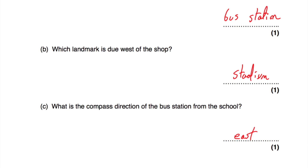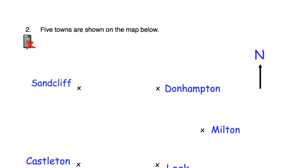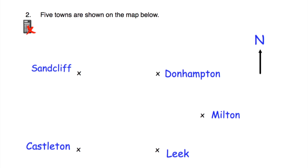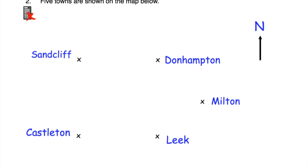Let's have a look at question two. Question two says five towns are shown on the map below. We've got Sandcliffe, Donhampton, Milton, Leake, and Castleton, and north is this way up.